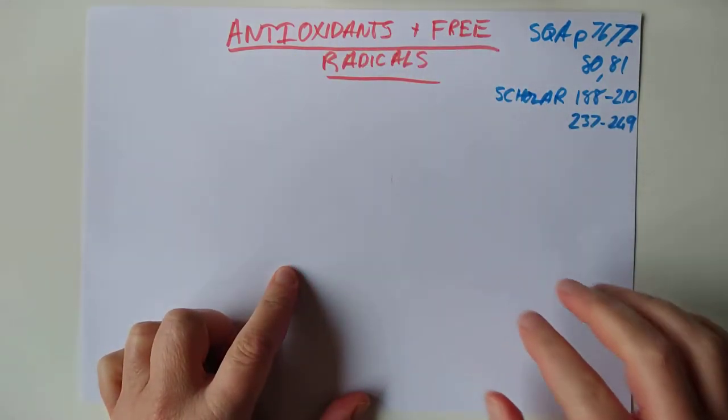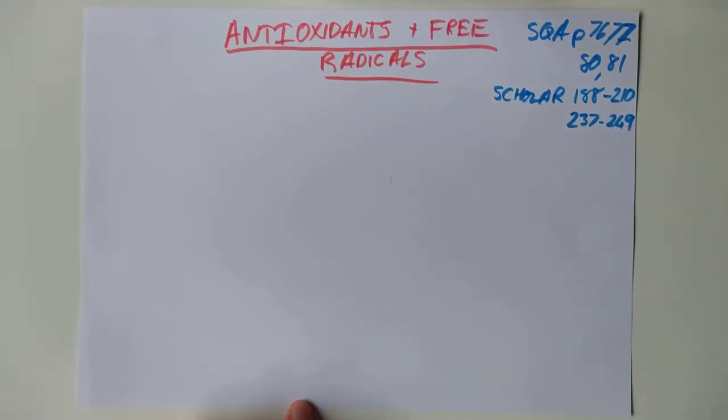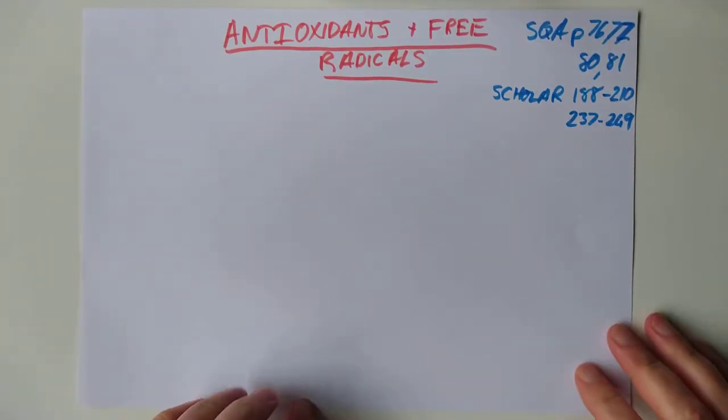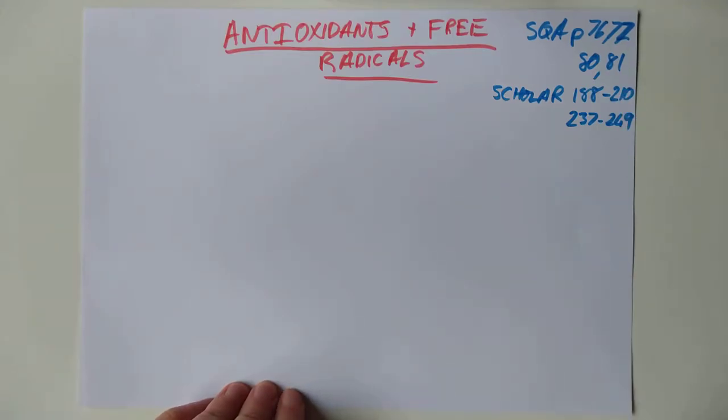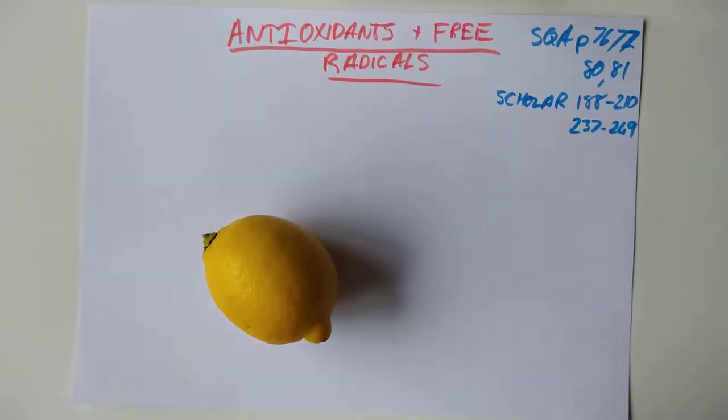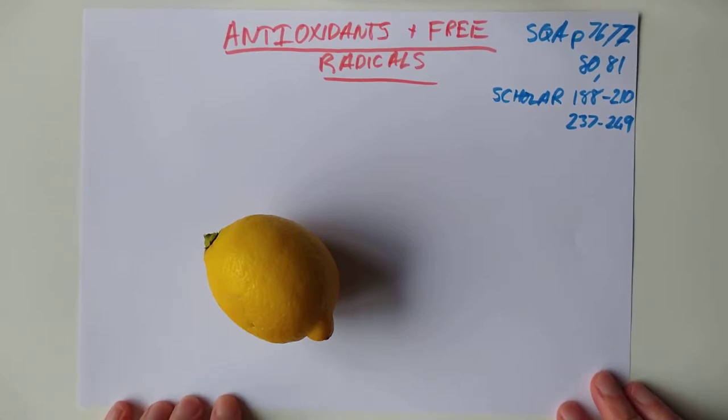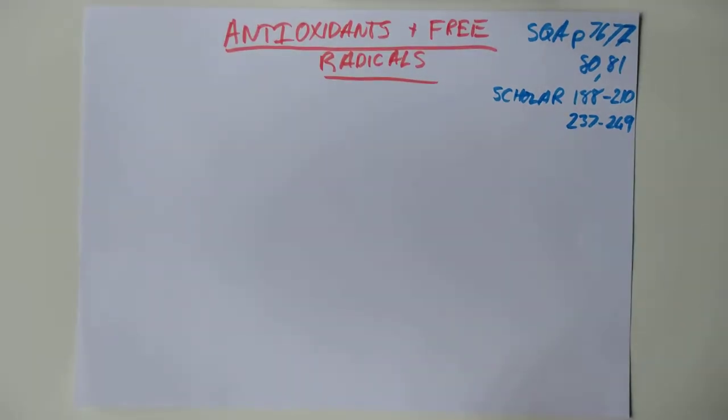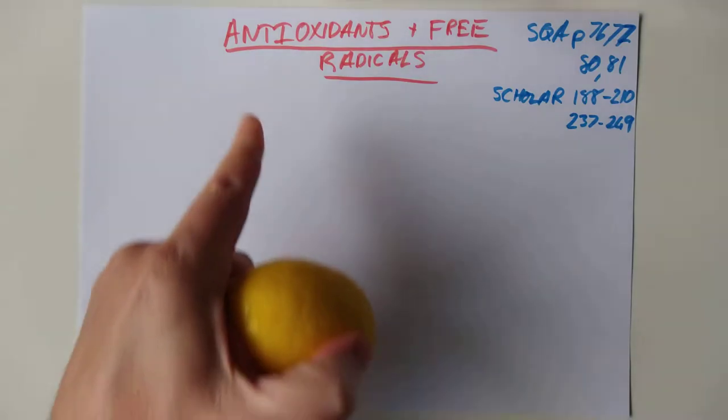I'd like to talk to you today about antioxidants and free radicals. There's two small parts today, but they sort of go hand in hand. Let's have a look at SQA 76 and 77 first. That's Scholar 188-210. This is about the fact that many flavour and aroma molecules are aldehydes. And lots of interesting flavours can be disrupted by oxygen.